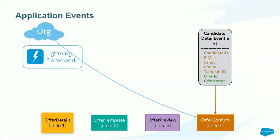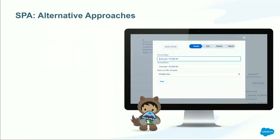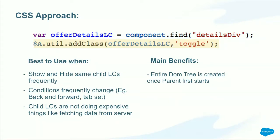We made use of two different types of Lightning events and CSS to accomplish this SPA architecture. But that's not the only approach — there's also the aura:if approach and the dynamic creation approach. Let's look at when it's best to use each.